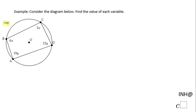Welcome, or welcome back, to C Squared. In this example we have a circle, and we notice we have a quadrilateral ABCD. This quadrilateral is an inscribed quadrilateral because all the vertices A, B, C, and D are on the circumference of this circle, and we are asked to find the value of each variable, which are X and Y.